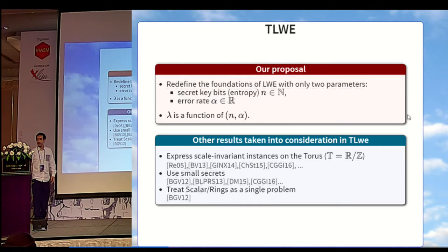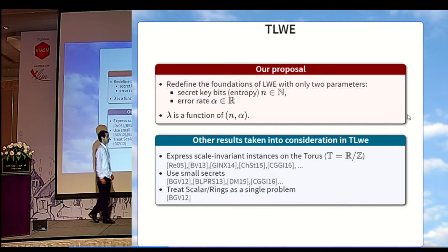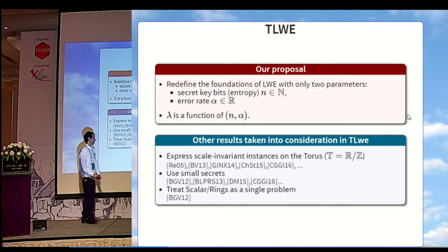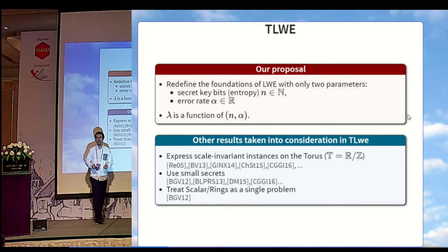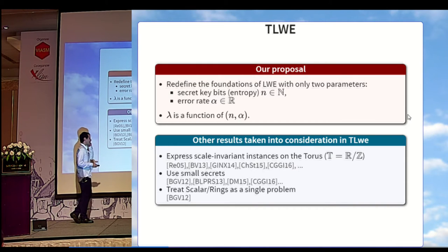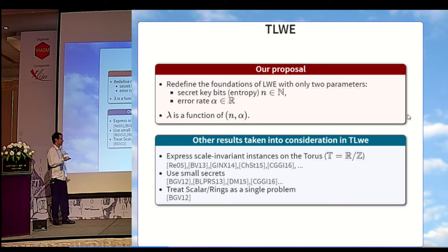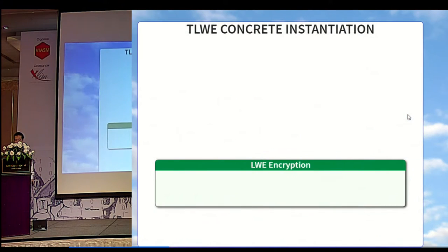We also included other famous results, like the fact that anything that is scale invariant should be expressed directly on the continuous torus, that is the real numbers modulo one, that we should use small secrets, so that our instances are directly connected without any intermediary to worst-case instances and other average-case instances. Also, we should treat skeleton ring as a single problem, since it was noticed in 2012 that they are syntaxically equivalent. So this is our proposal.